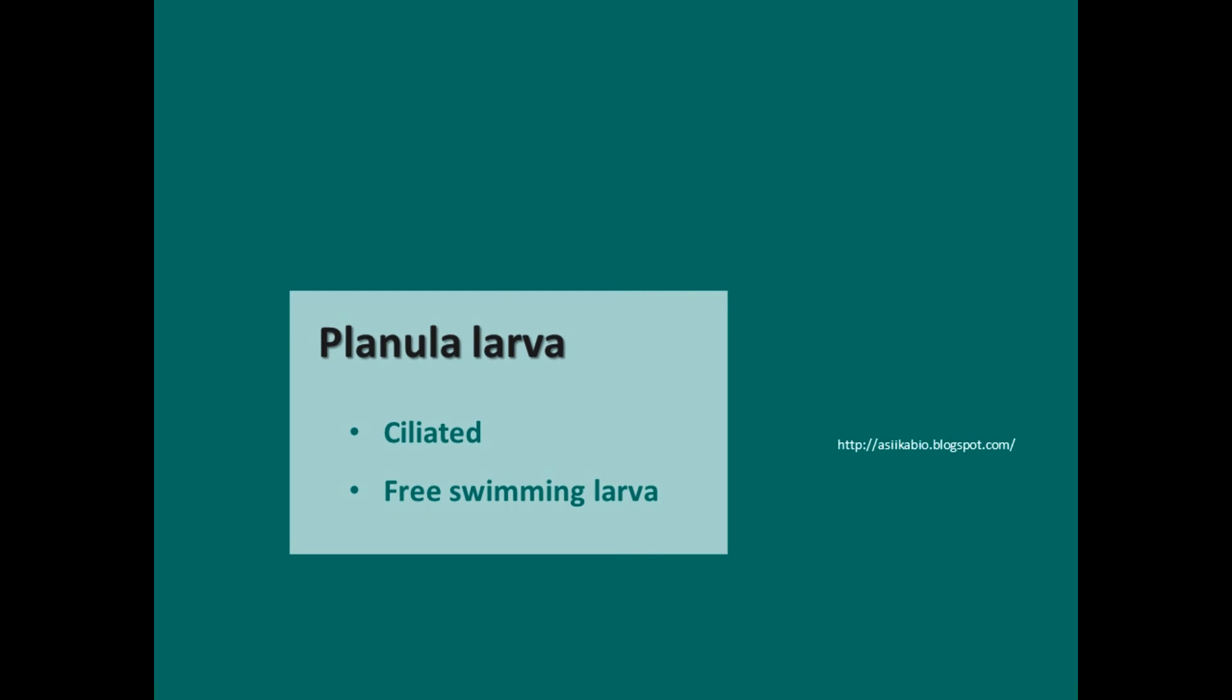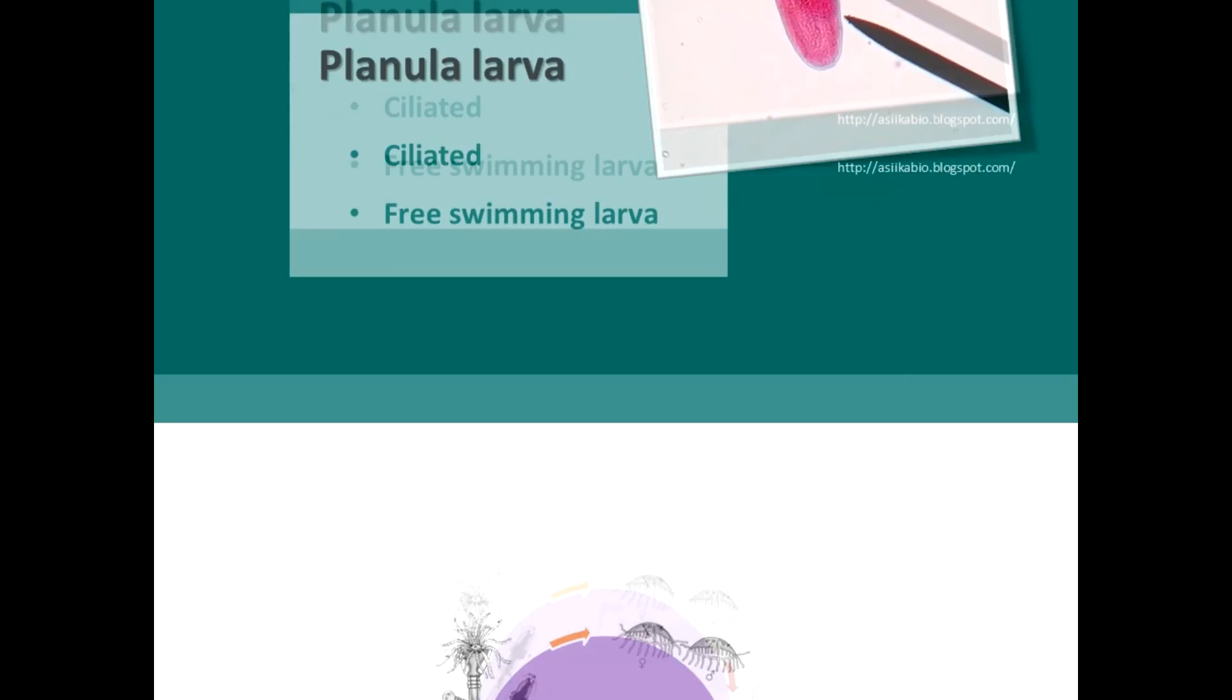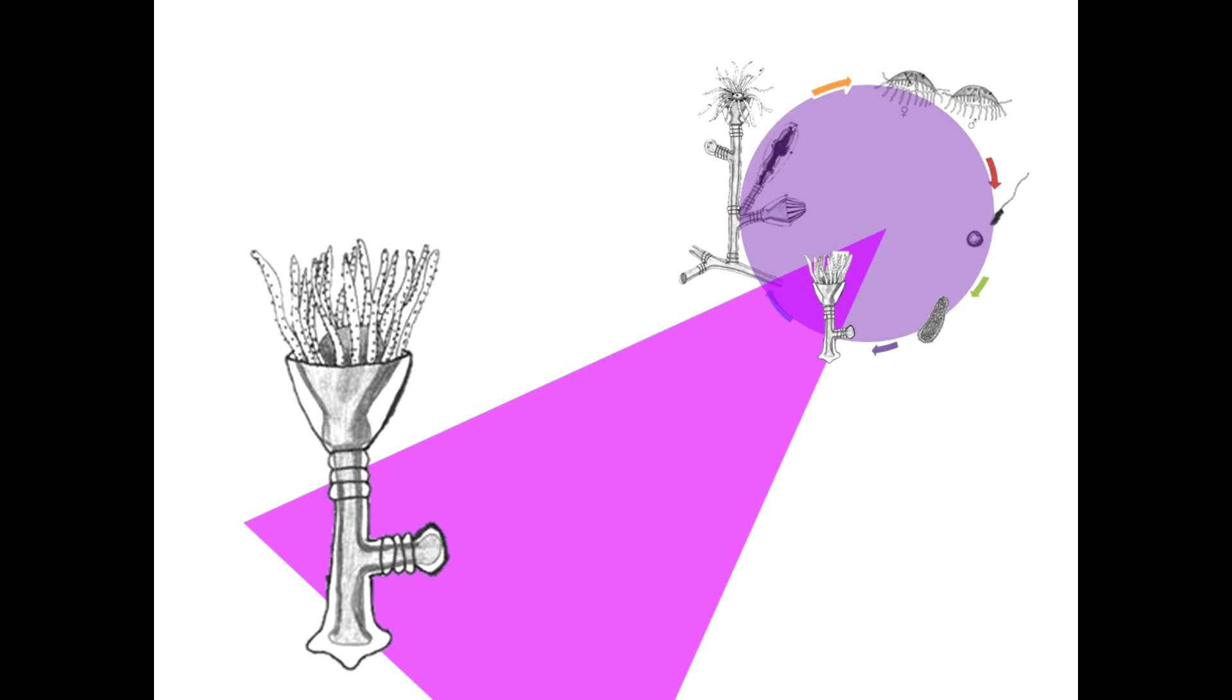The zygote grows into an embryo, eventually becoming a planula, a ciliated free-swimming larva. Each planula will eventually attach itself to a rock or other substrate and continue to grow, developing into a polyp.